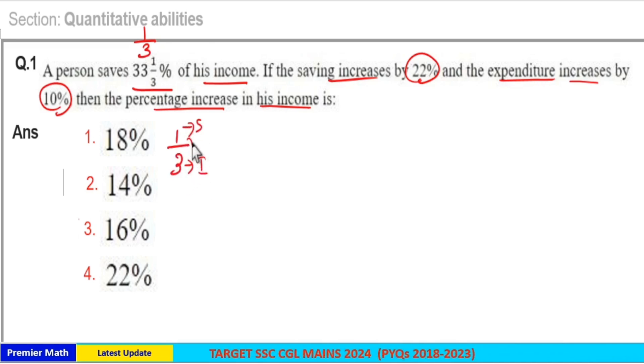Income minus savings equals expenditure, which is 2 parts. So the income, expenditure, and savings ratio is 3:2:1. Instead of 3:2:1, take it as 300, 200, and 100.